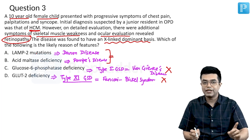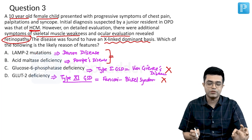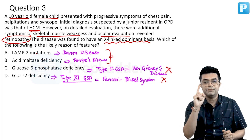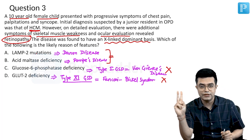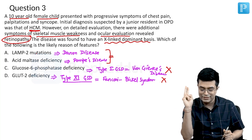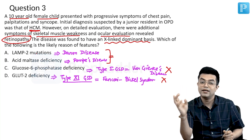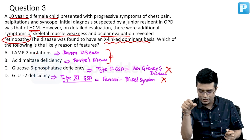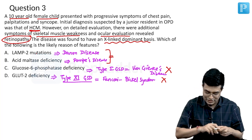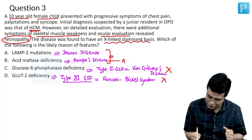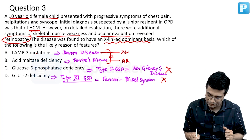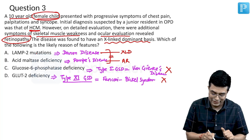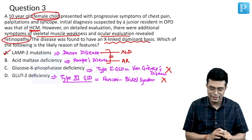Remember that both Pompe and Danon disease can have a hypertrophic obstructive cardiomyopathy (HOCM)-like presentation. The key clinching points here are: it is a female child, there is retinopathy — which is not very common in Pompe disease — and most importantly, the inheritance pattern. Pompe disease is autosomal recessive, whereas Danon disease is X-linked dominant. Since this is a female child presenting with these features, the likely answer is Danon disease, that is LAMP2 mutation.